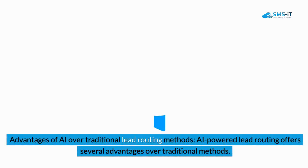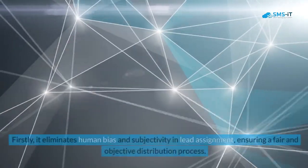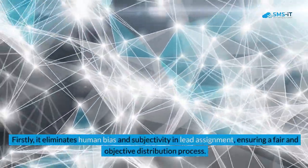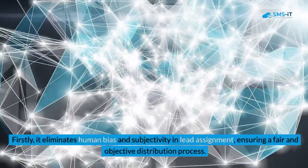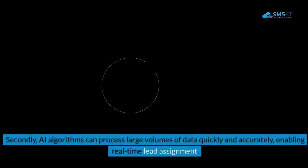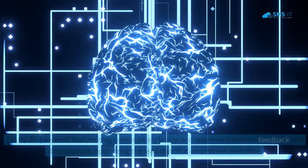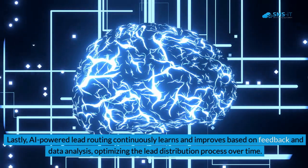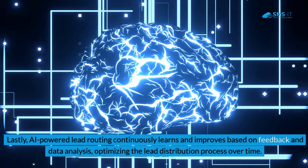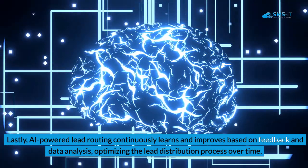Advantages of AI over traditional lead routing methods: AI-powered lead routing offers several advantages over traditional methods. Firstly, it eliminates human bias and subjectivity in lead assignment, ensuring a fair and objective distribution process. Secondly, AI algorithms can process large volumes of data quickly and accurately, enabling real-time lead assignment. Lastly, AI-powered lead routing continuously learns and improves based on feedback and data analysis, optimizing the lead distribution process over time.